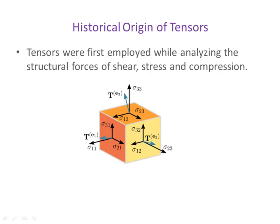Here's a little historical reference for tensors. They were first employed while analyzing the structural forces of shear, stress, and compression. You see a diagram here where, in order to properly analyze these forces in a material substance, we need nine different components. Thus, we represent this with a second-rank tensor.